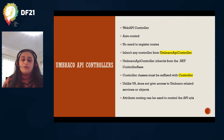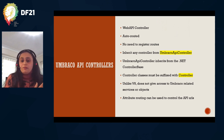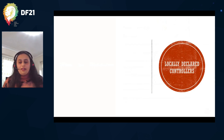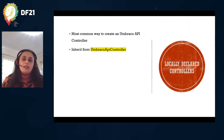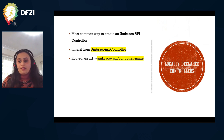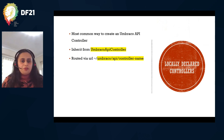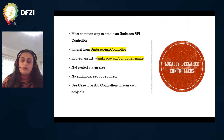You can also use attribute routing for further control over the API URL. There are three flavors of Umbraco API controllers. The most common is locally declared controllers — you inherit from UmbracoApiController and it's routed via the URL /umbraco/api/ followed by the controller name. There's no additional setup required, and the use case is for creating API controllers in your own projects.